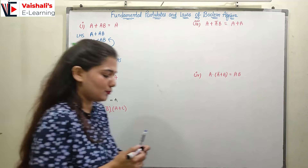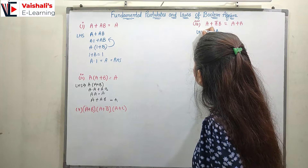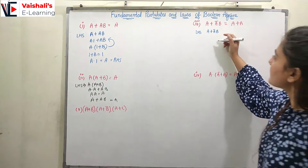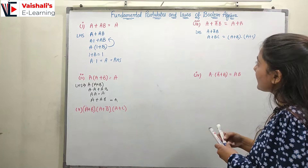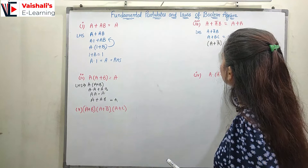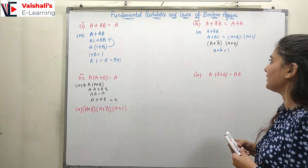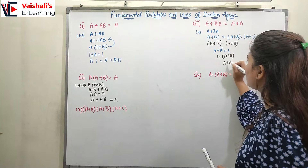Now moving to: a + āb. The left hand side is a + āb. I recall the expression a + bc = (a + b)·(a + c). Similarly, a + āb = (a + ā)·(a + b). Now a + ā is always equal to 1 (complement property). So we have 1·(a + b). When we AND 1 with any variable, we get that variable only. So this equals a + b, and our right hand side is equal.